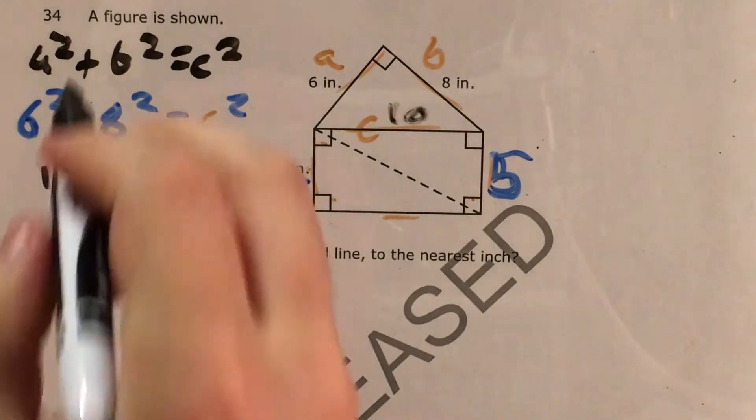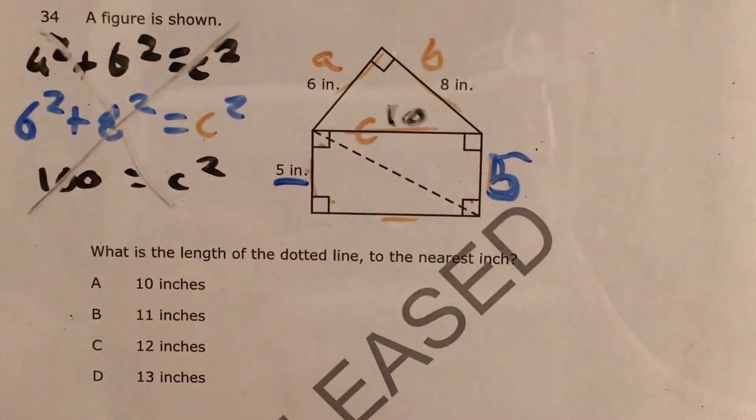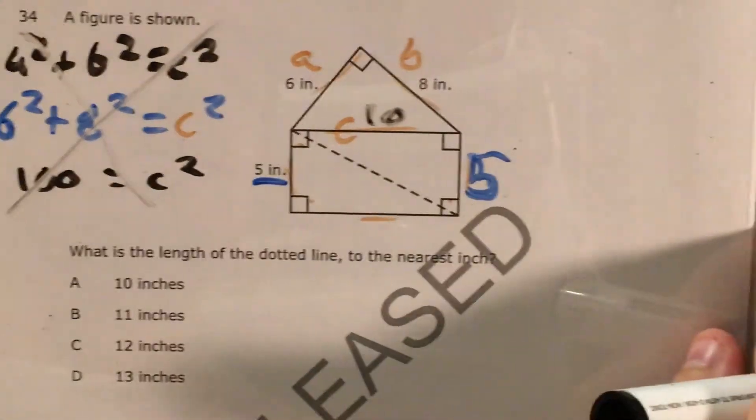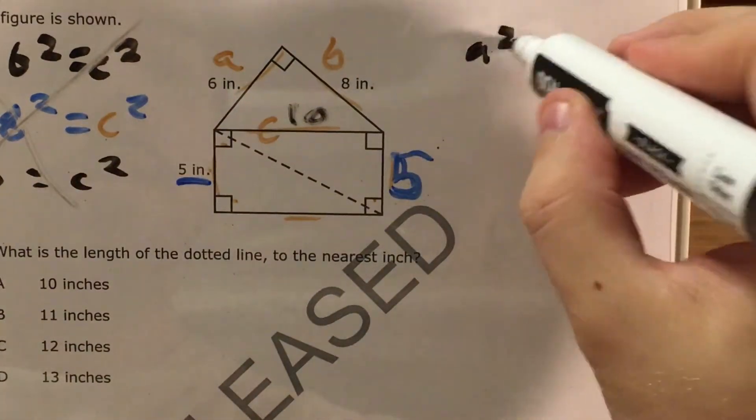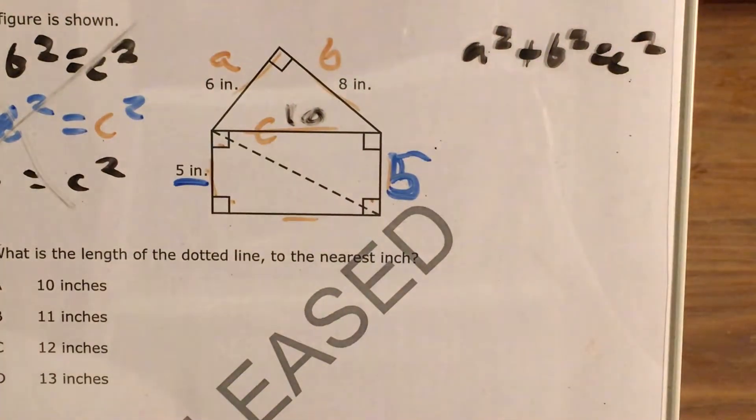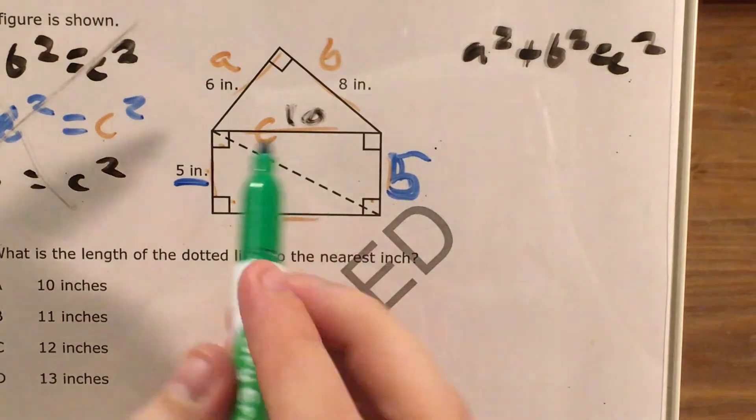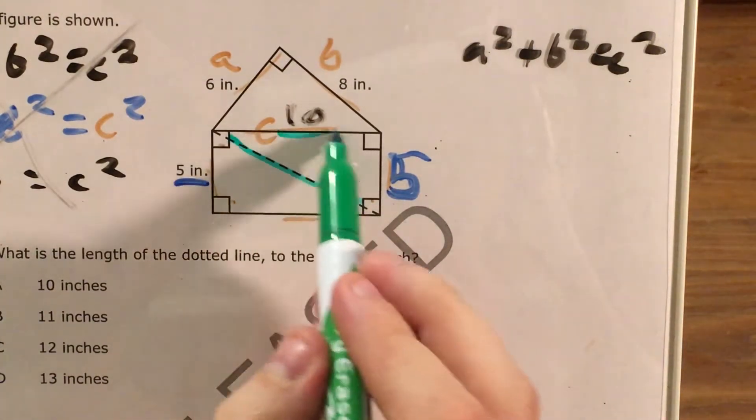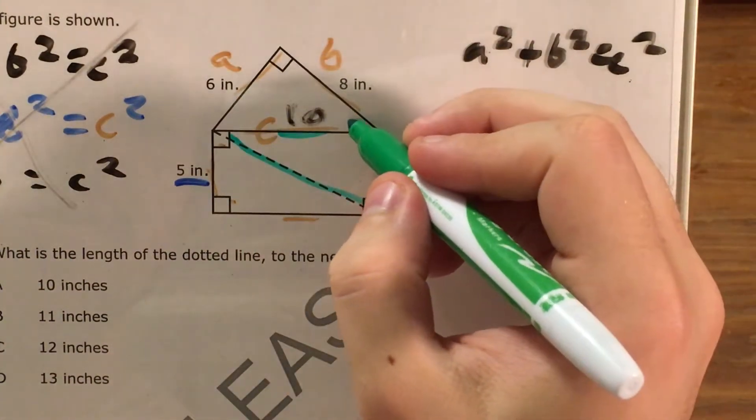And now, I'm going to actually scrap this. I'll leave it there so you can still see what we did. But I'm going to have to start a new Pythagorean theorem problem. I'll do that over on this side. Once again, I start with A squared plus B squared equals C squared. But this time, this is my hypotenuse and these are my legs.